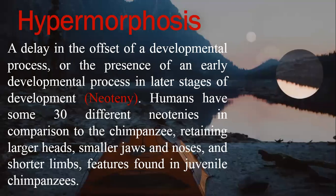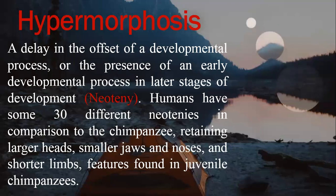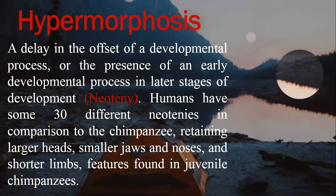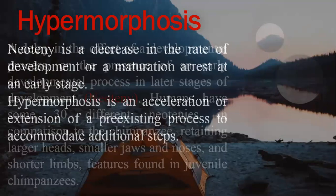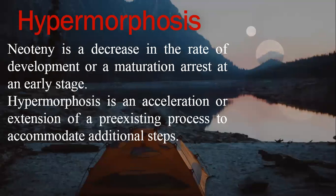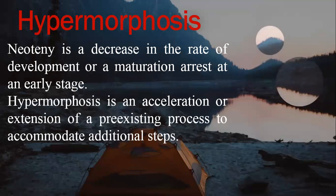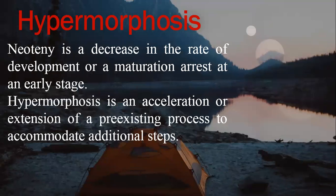We can see later-stage features in peramorphosis. For example, human neoteny features unlike chimpanzees include smaller jaws and noses and shorter limbs. Neoteny is the decrease in rate of development or maturation, while hypermorphosis and acceleration involve extension of pre-existing developmental processes to accumulate additional steps.